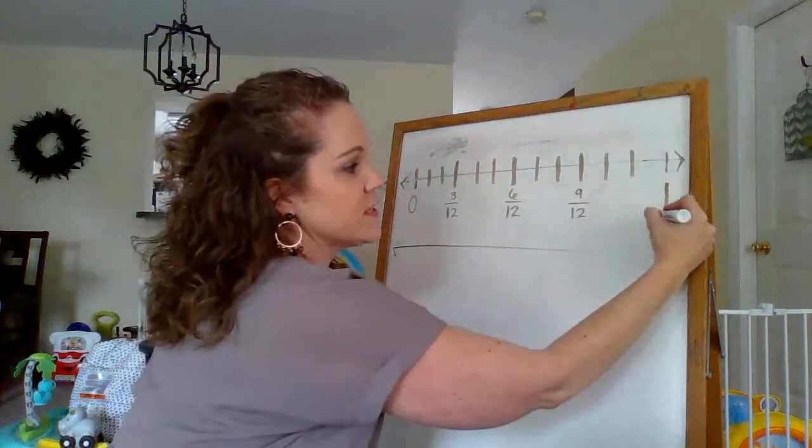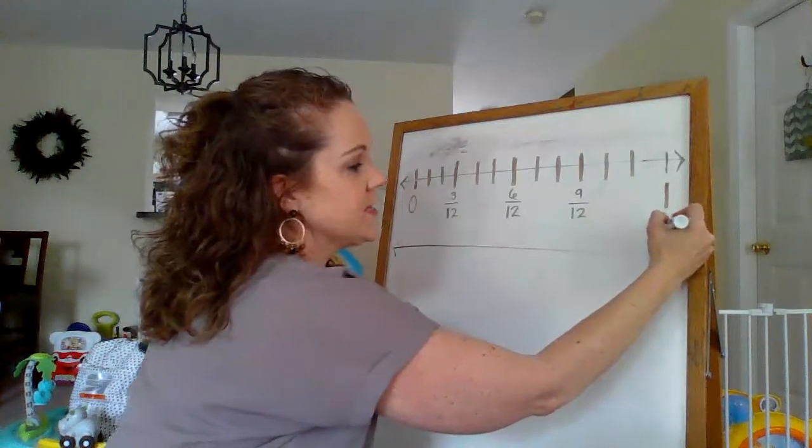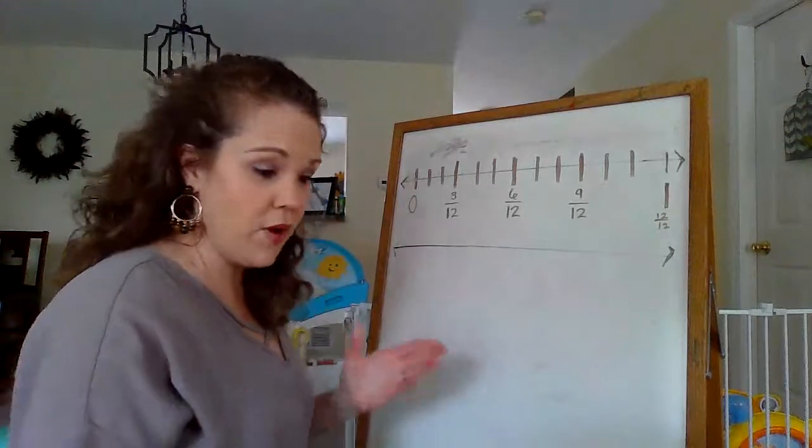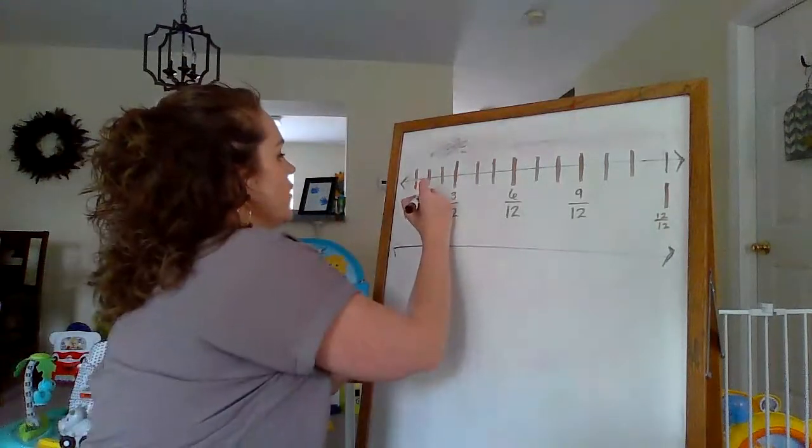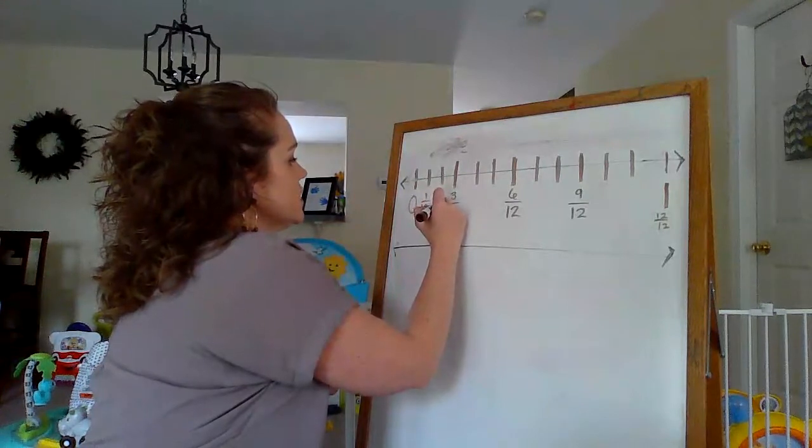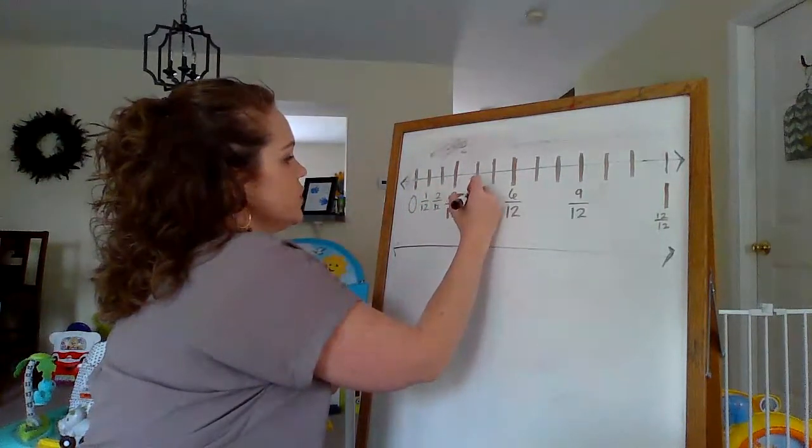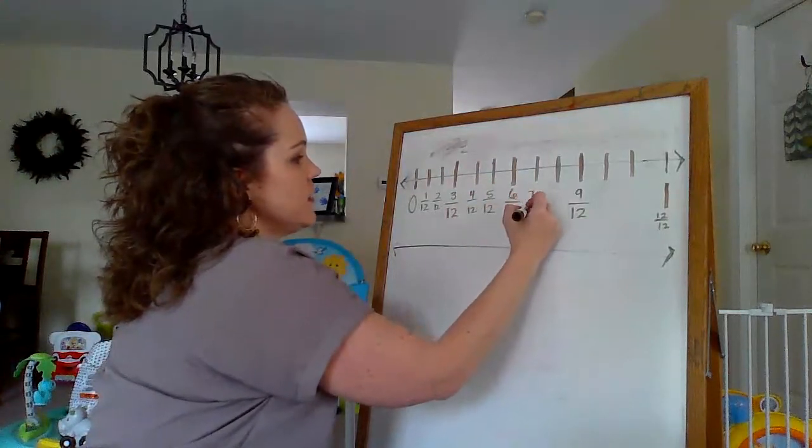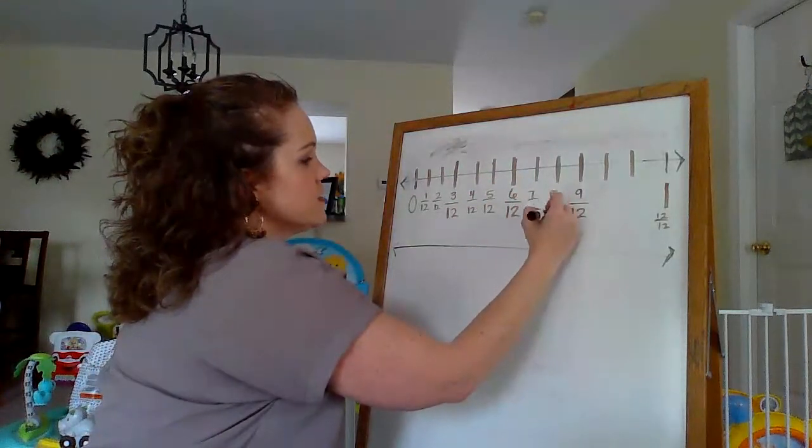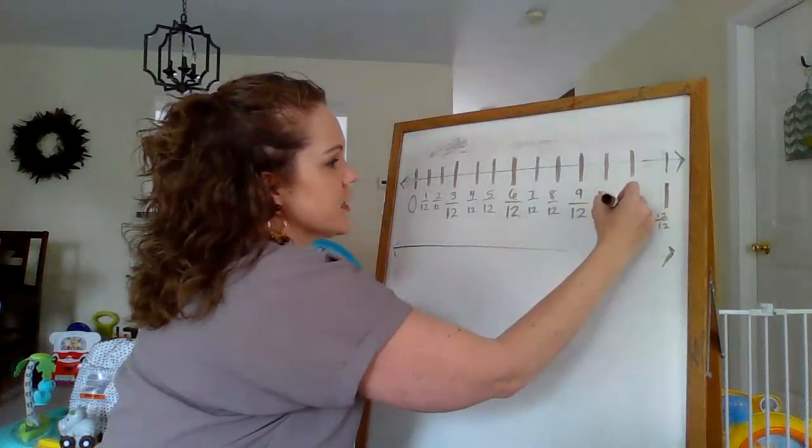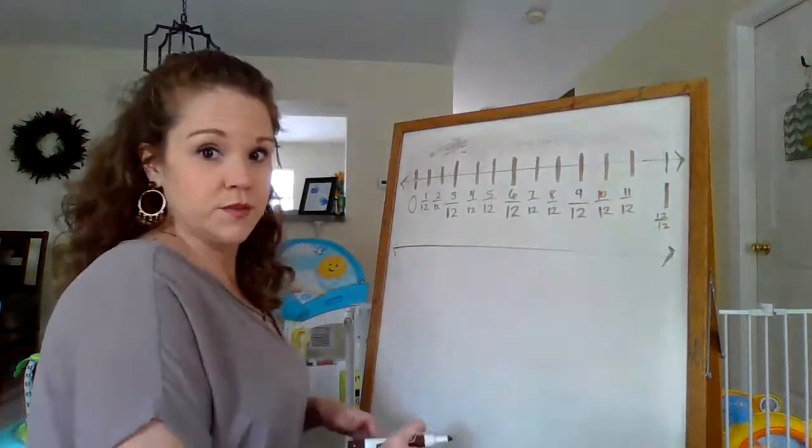So that means this obviously is 12 twelfths. As I go, I can fill in these empty marks, right? So I would have 1 twelfth, 2 twelfths, 3 twelfths, 4 twelfths, 5 twelfths, 6 twelfths, 7 twelfths, 8 twelfths, 9 twelfths, 10 twelfths, and 11 twelfths. That is a lot of twelfths.